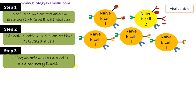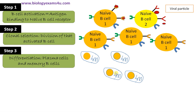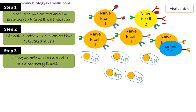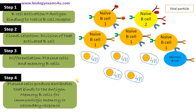Step three is differentiation, followed by step four: differentiation into plasma cells and memory B cells. Plasma cells are responsible for the production of antibodies that bind to the antigen. Millions of antibodies are synthesized by these plasma cells and released into the bloodstream and into the circulation.